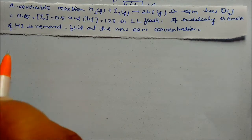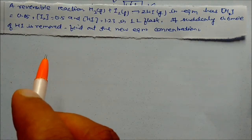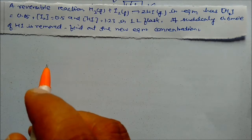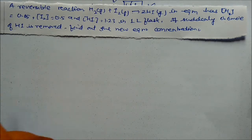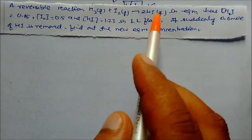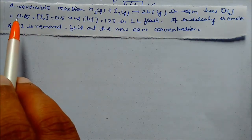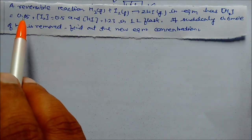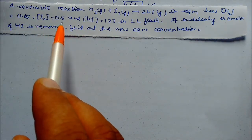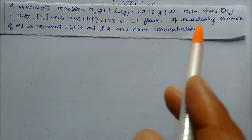We will see some problems based on chemical equilibrium, that is Kc = Kp = Kc·RT^Δn. A reversible reaction H₂ + I₂ ⇌ 2HI has H₂ = 0.5 mol, I₂ = 0.5 mol, and HI = 1.23 mol in a 1 liter flask.